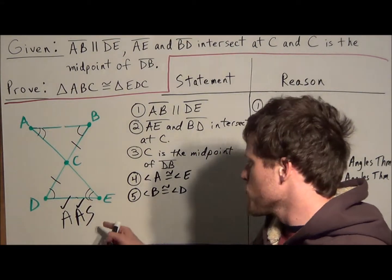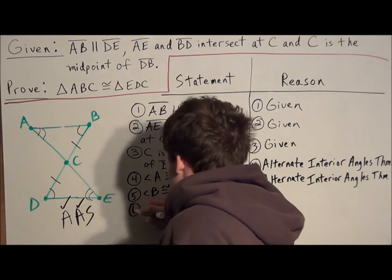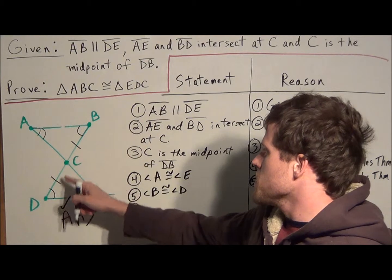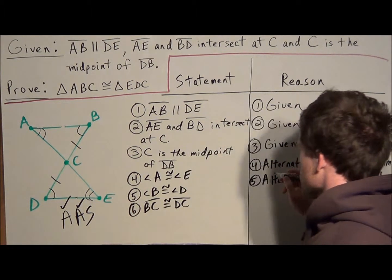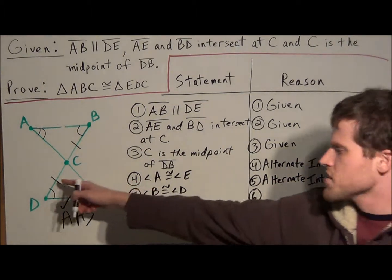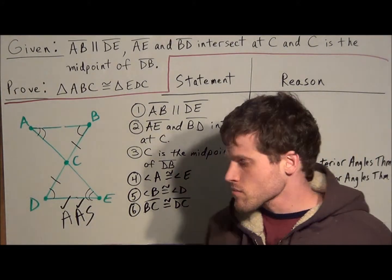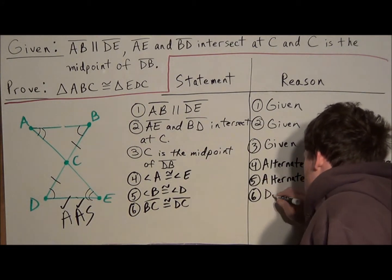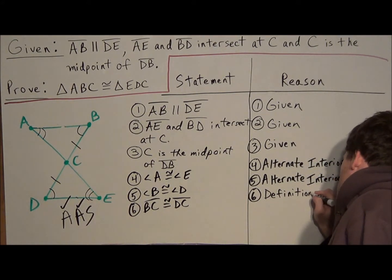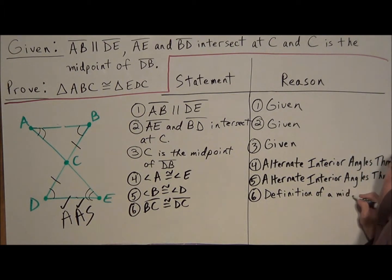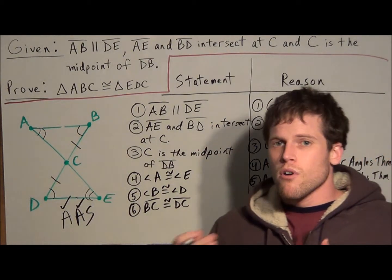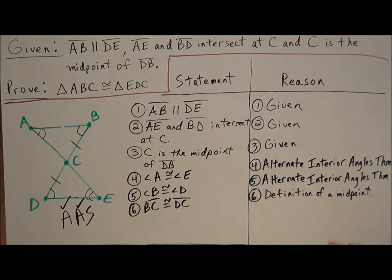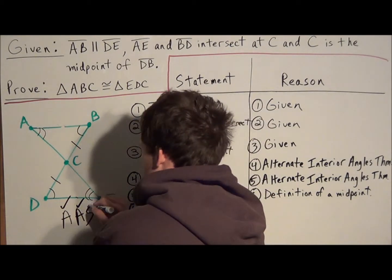Now we need to establish a pair of congruent sides. We know that BC is congruent to DC. How do we know this? From the given information: C is the midpoint of BD. So the reason is the definition of a midpoint. A midpoint separates a line segment into two congruent parts. We can now check off our congruent side.